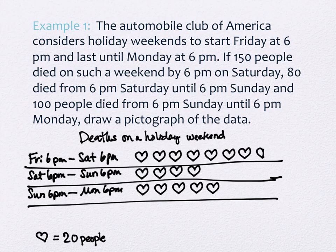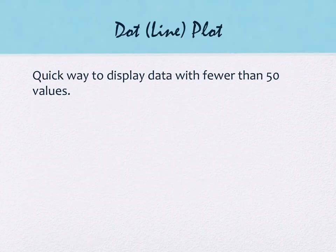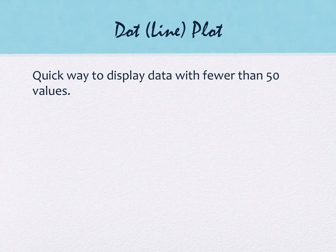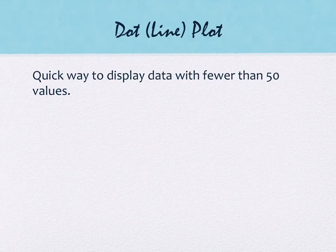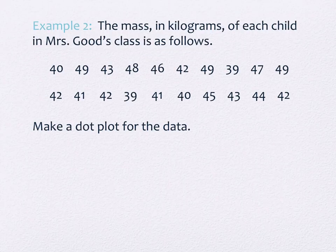The next one is a dot plot, sometimes called a line plot — but dot plot makes more sense. This is a quick way to display data with fewer than 50 values. In spite of the name, you can use dots or X's. Because X's show up better visually, I'm going to use X's. Here's our example.